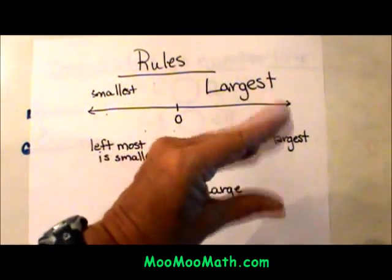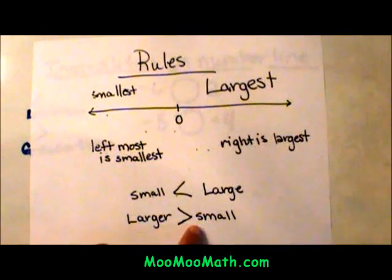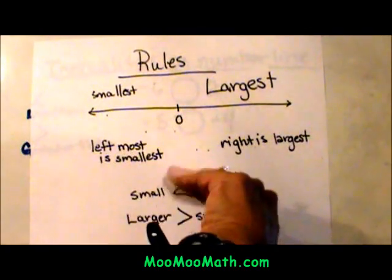Some people look at the alligator eating the larger number. The same here, if the larger number is on the left and the smaller number is on the right, then you use the greater than symbol.